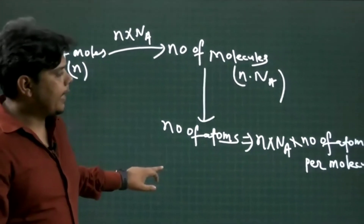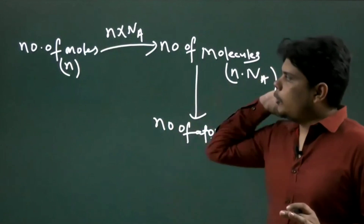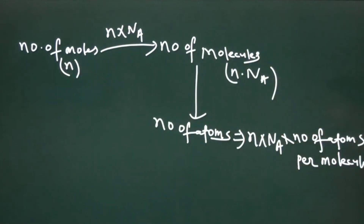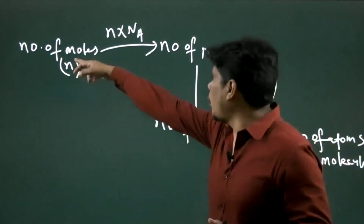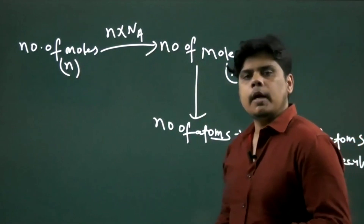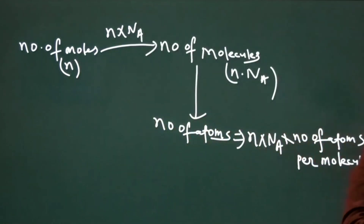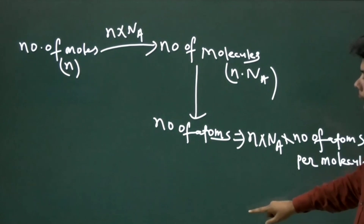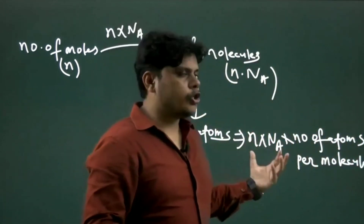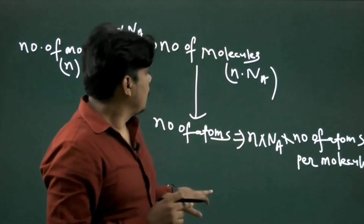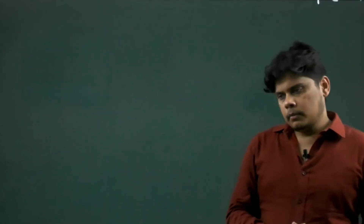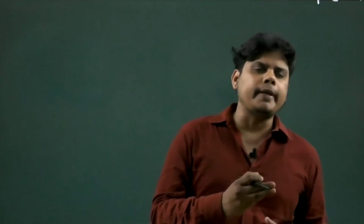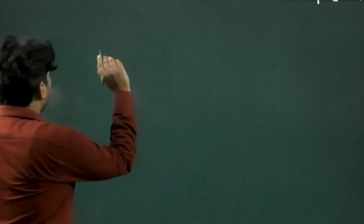This is like a flowchart — moles to molecules, and after molecules you can easily find atoms. This flowchart must be remembered: moles → molecules → atoms.